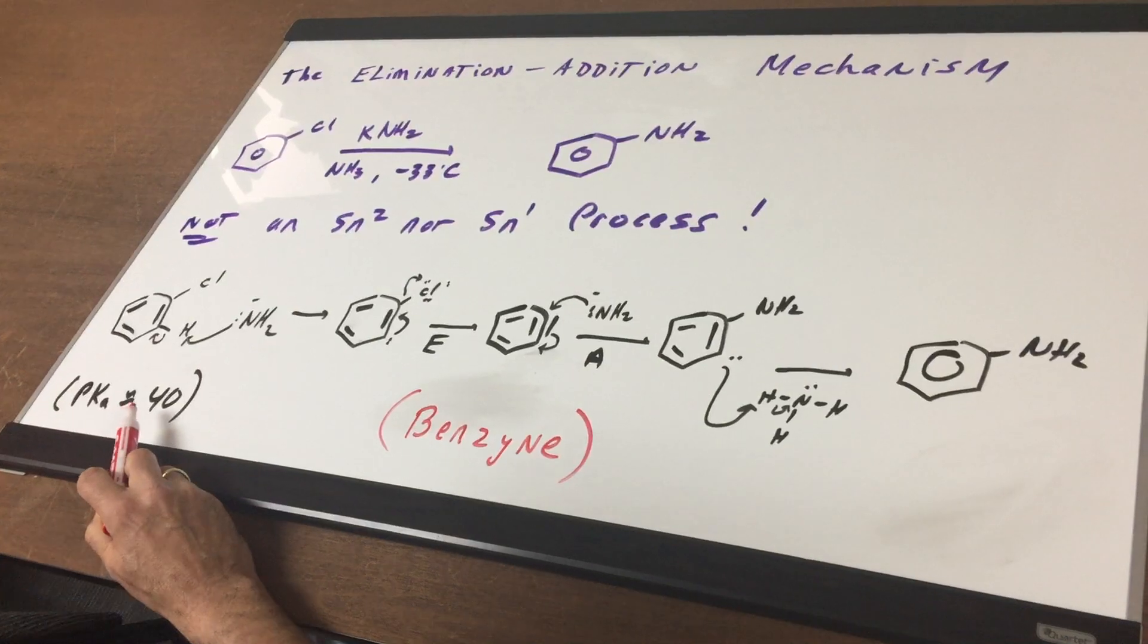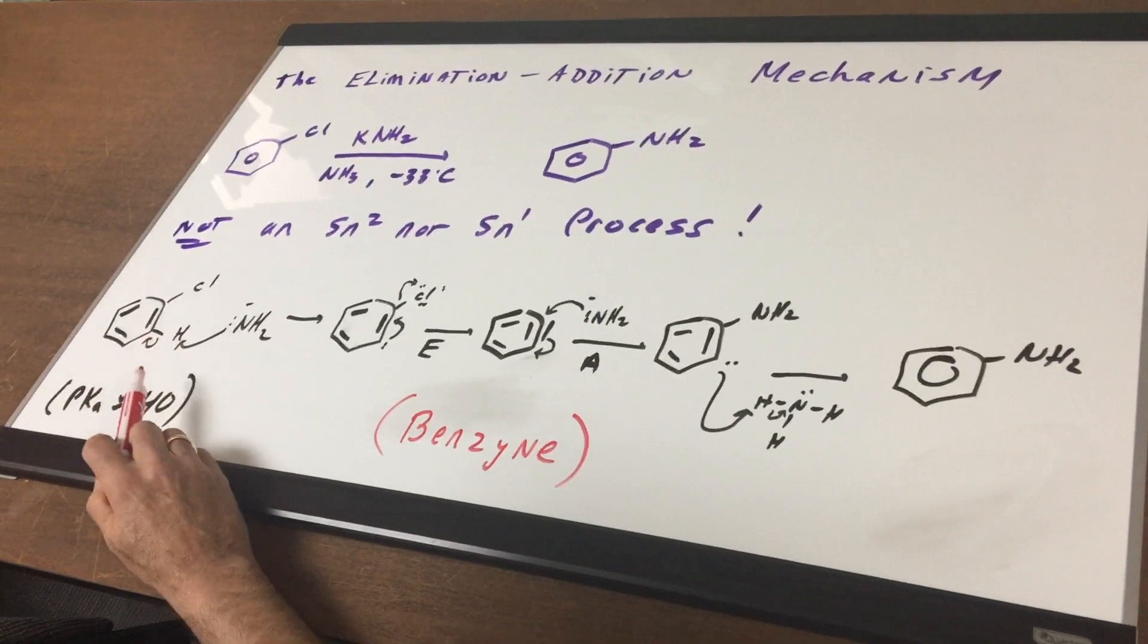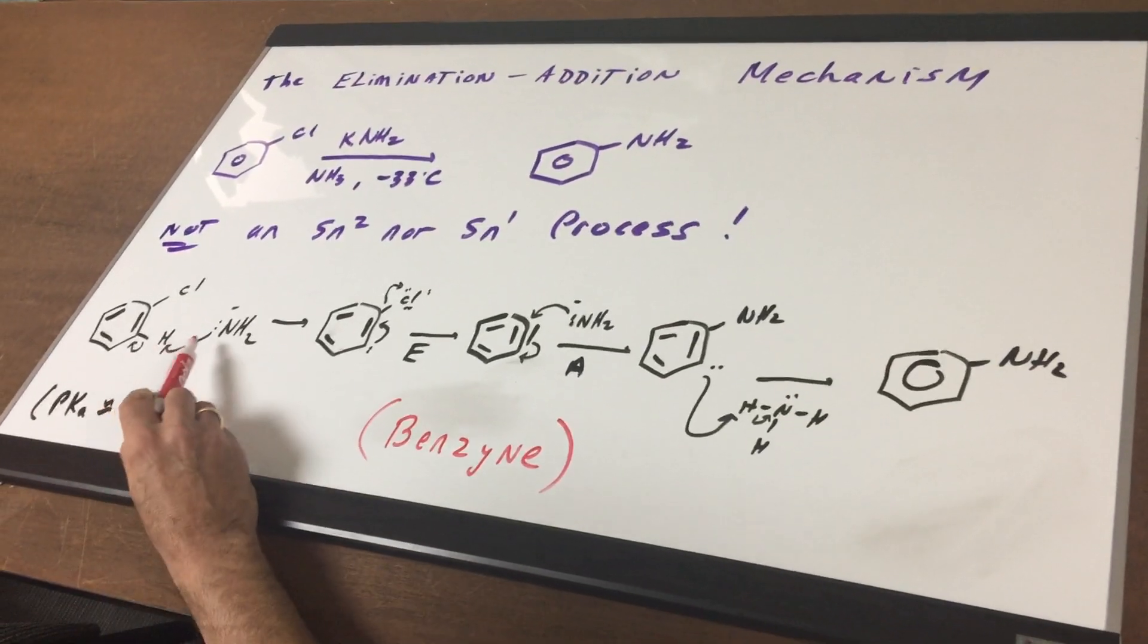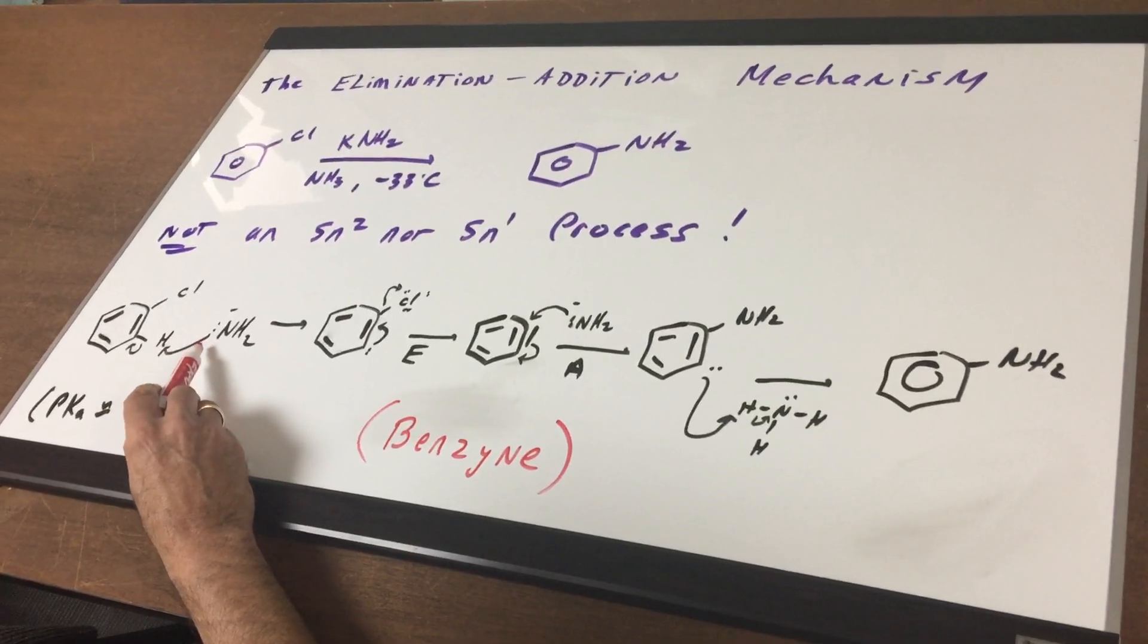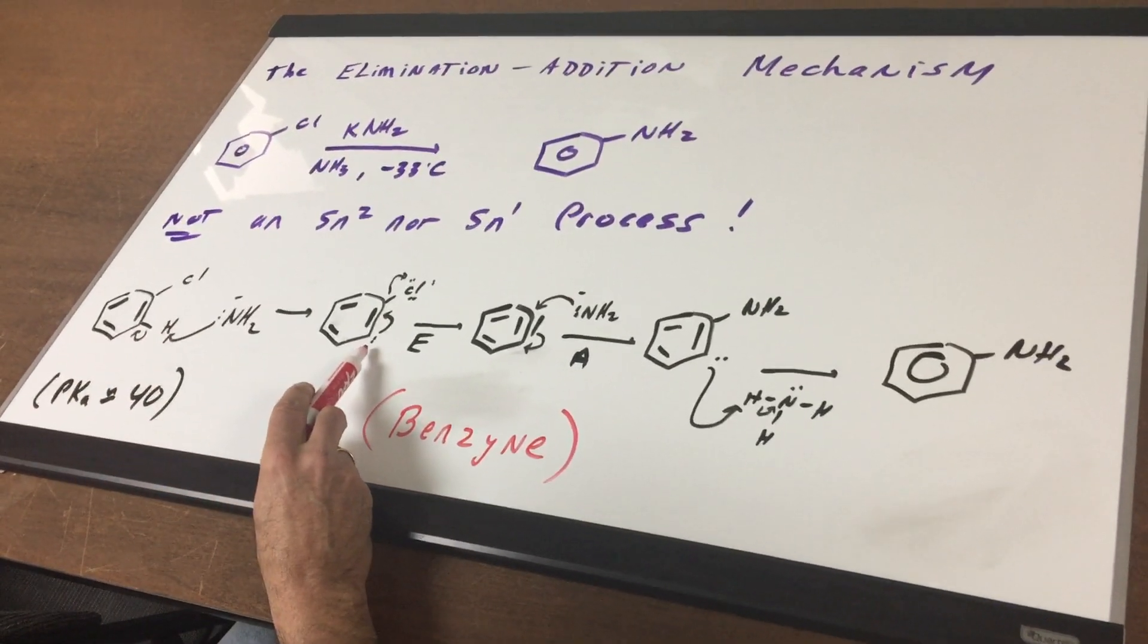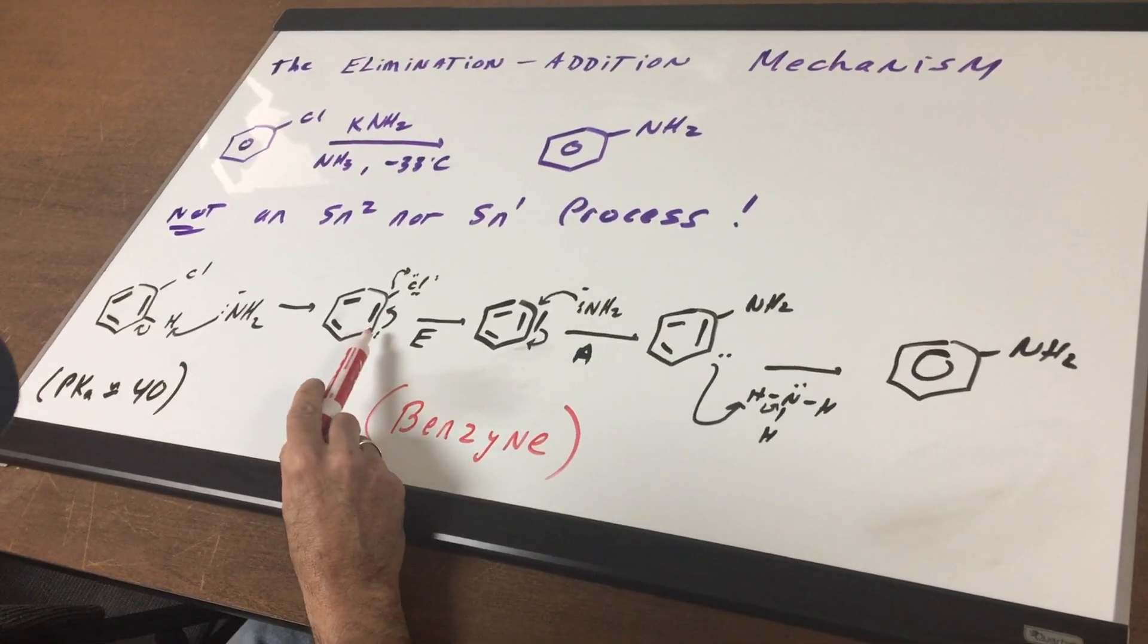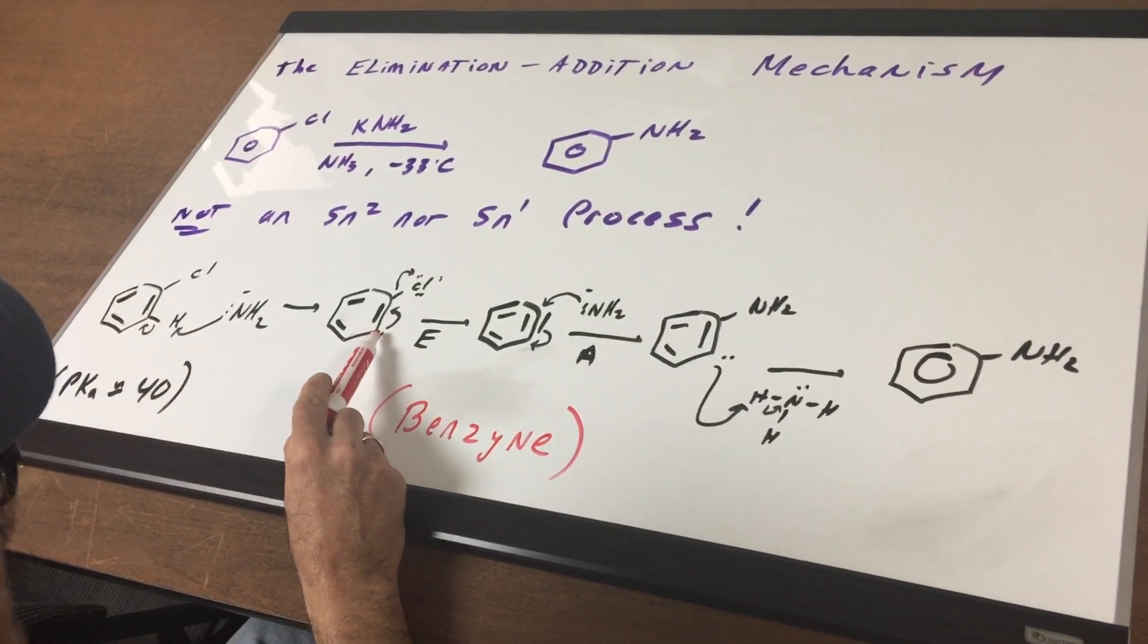In the very first step, I'm going to take advantage of the fact that the aromatic halide here has a pKa of around 40. So in the first step, I'm going to use that strong base to form my carbanion. And I remove the H adjacent to the chlorine.